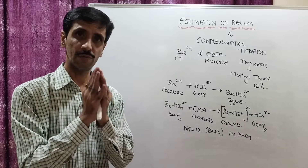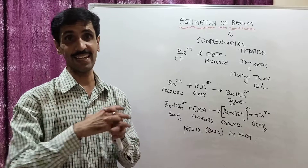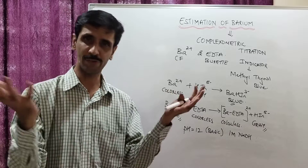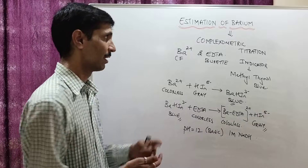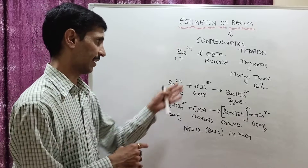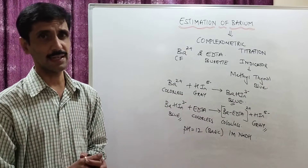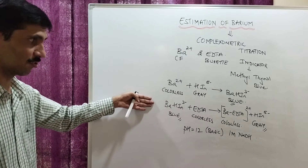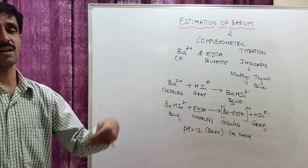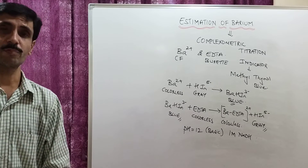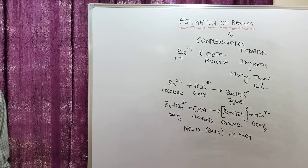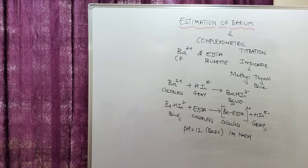So this is the theory behind this particular experiment. We are discussing complexometric titration for estimation of barium rather than gravimetric estimation. It is a titration with EDTA using methyl thymol blue indicator in the H·In⁵⁻ form — gray in color. The color change at the end point is blue to gray, and the pH must be 12, achieved using 1 molar NaOH.